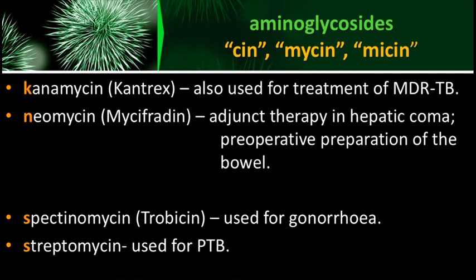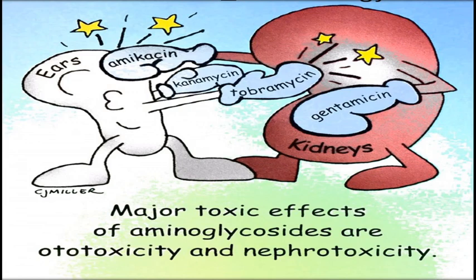Spectinomycin, brand name Trobicin, is used for gonorrhea, a sexually transmitted infection. Streptomycin is another aminoglycoside that can be given for pulmonary tuberculosis (PTB) via intramuscular or parenteral route. The major toxic effects of aminoglycosides — as shown in the image of the kidney and ear — are ototoxicity and nephrotoxicity, applicable to amikacin, kanamycin, tobramycin, and gentamicin.